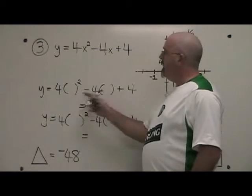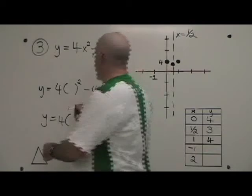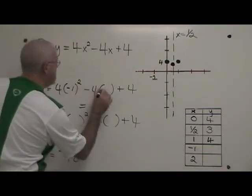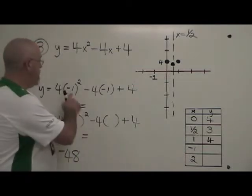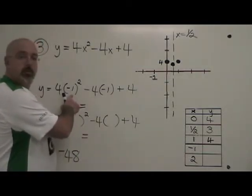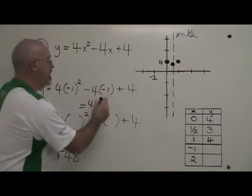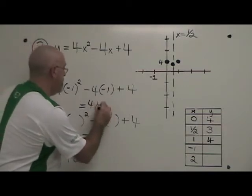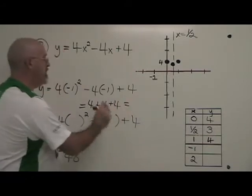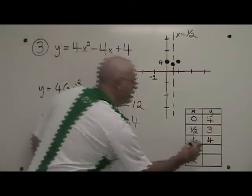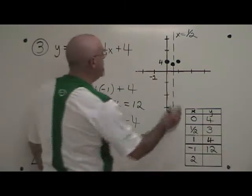Here is the equation with the x's missing so there are spaces for me to fill them in. If x equals negative 1, I put a negative 1 into both of these positions. Negative 1 squared is positive 1, and 4 times positive 1 is 4. Minus 4 times negative 1 is also equal to positive 4. And then I add this 4 at the end of the equation. 4 plus 4 plus 4 equals 12. And I have the point negative 1, 12 in my table and on my graph.